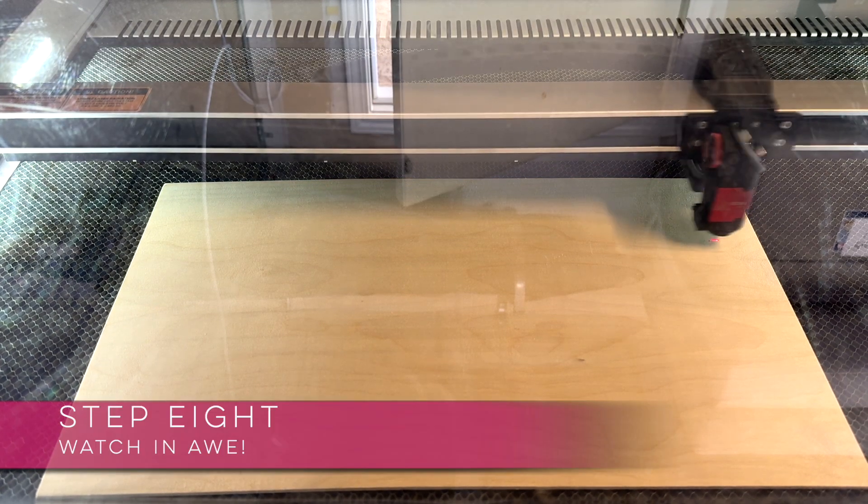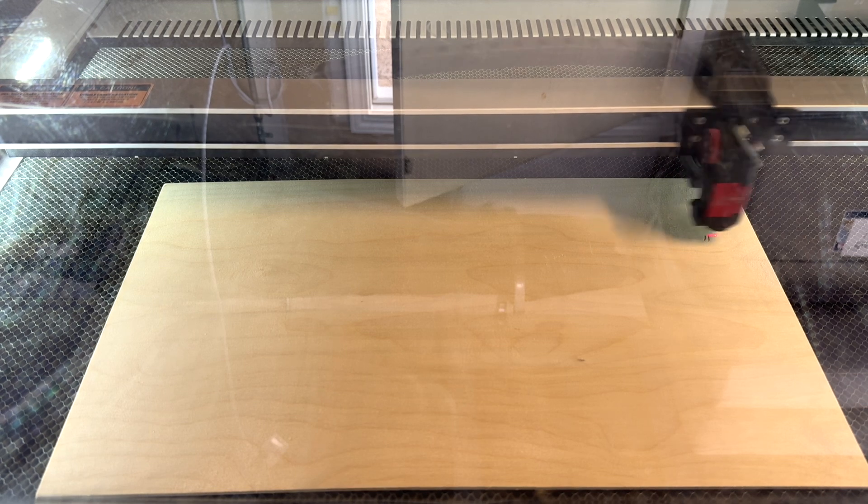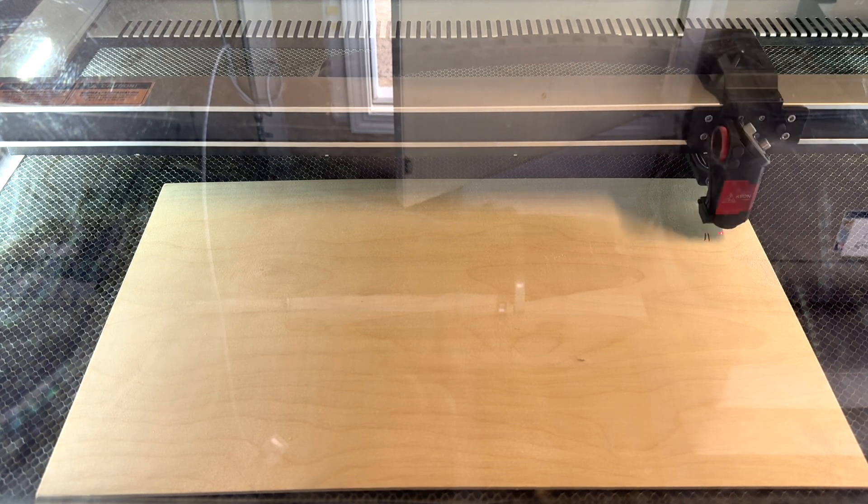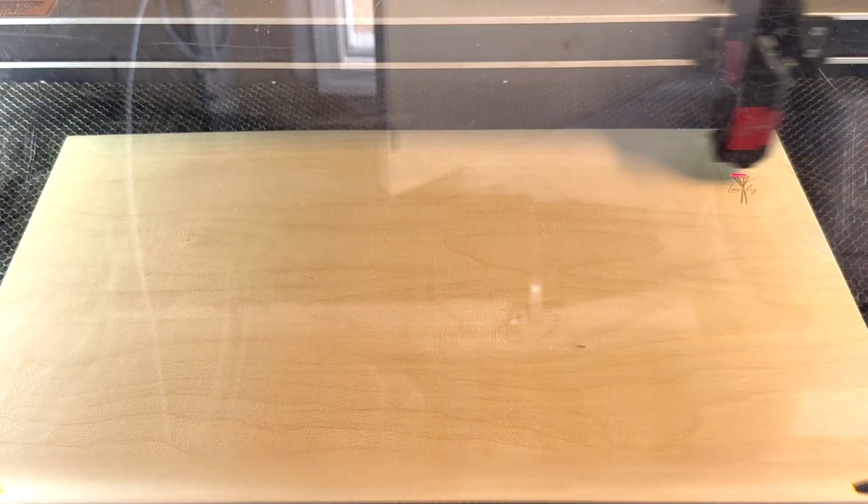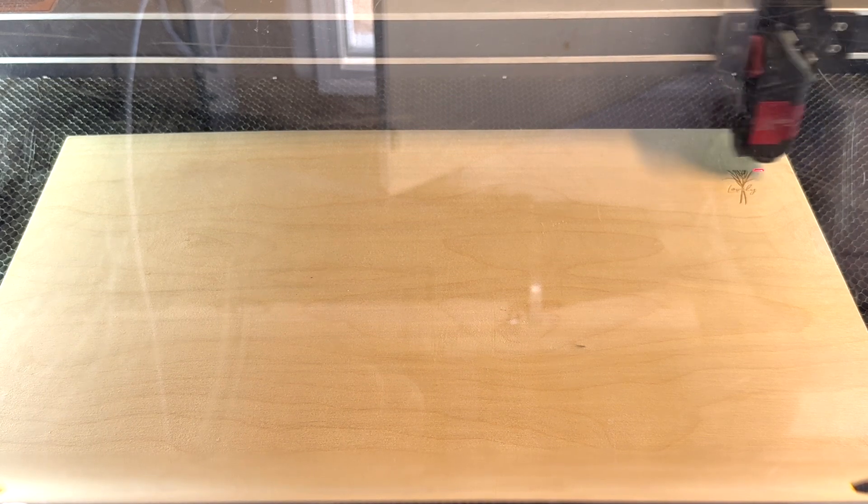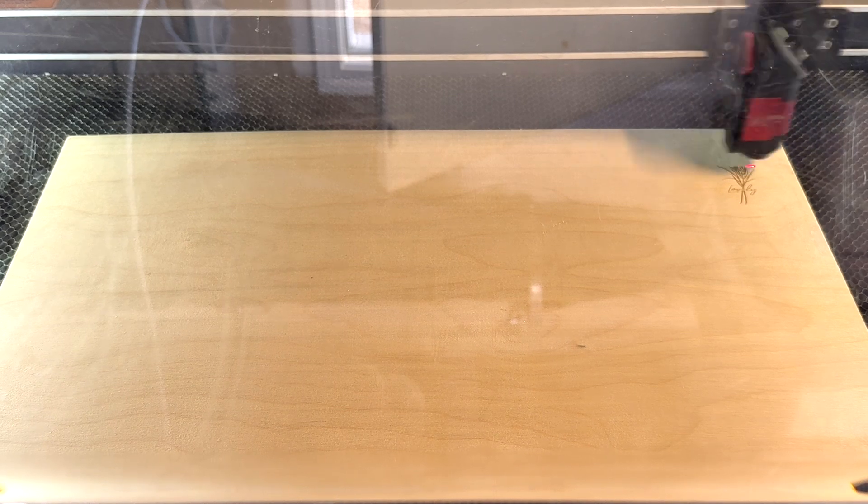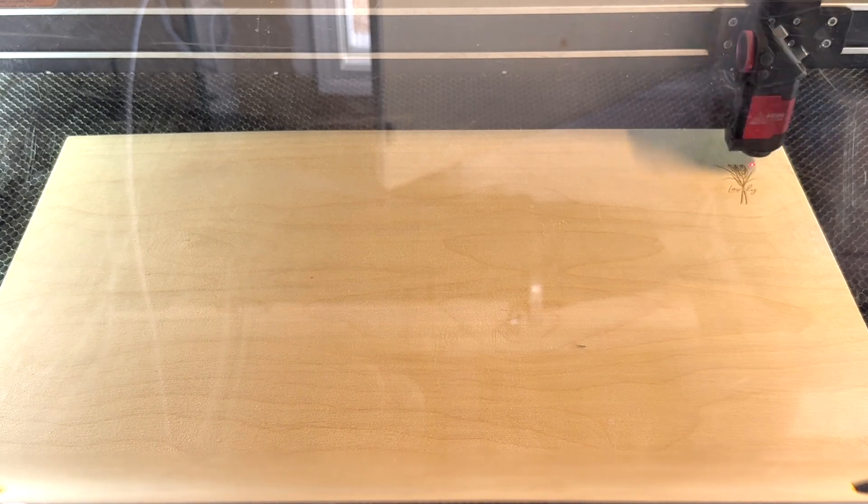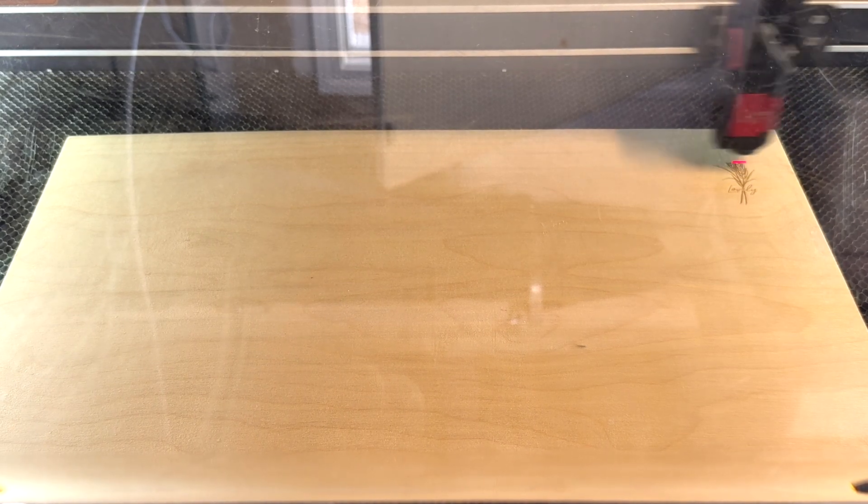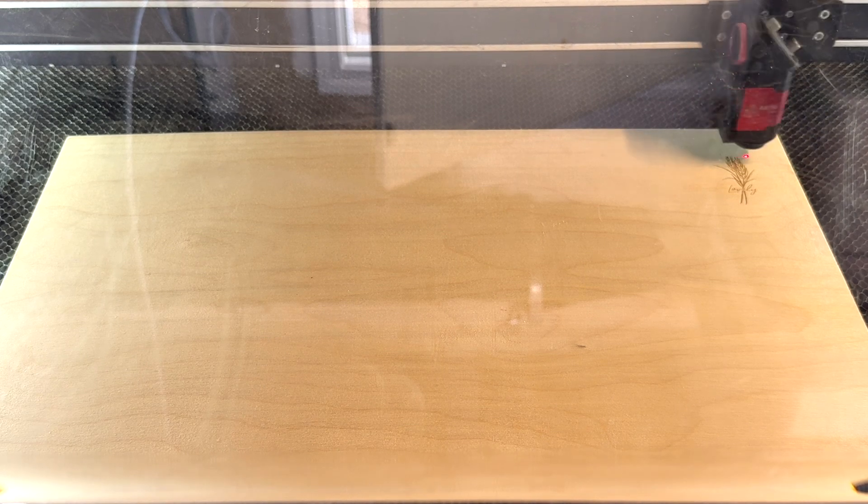Step eight is to watch in awe as your laser brings your design to life. I love this part so much, it never gets old, it's so fascinating. Today I'm using some simple Baltic birch plywood to create a keychain but keep in mind these lasers are so powerful you can cut and engrave acrylic, you can also engrave on glassware or on powder coated tumblers, and I've even engraved on a river rock from my garden.